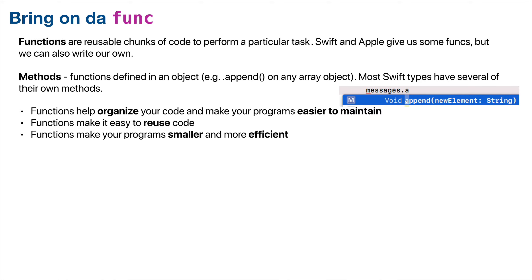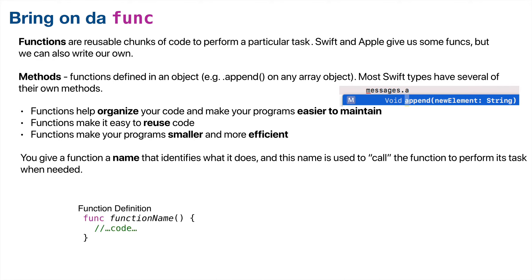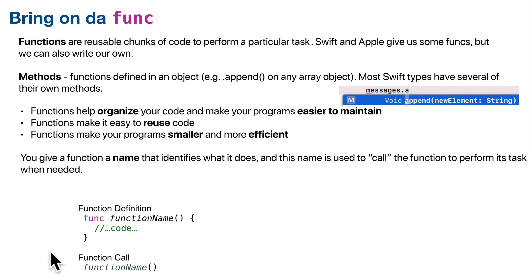To write a function, start with the keyword func, then give it a name. A good name might describe the action taking place, like messageButtonPressed or viewDidLoad. The name is always followed by two parentheses. You can put things inside the parentheses to pass values into the function, and you can return results from functions too, though at a minimum that's not necessary. The statements you execute when you call a function go inside the curly braces. To call the function, simply use its name followed by parentheses.